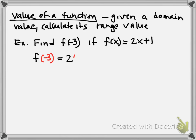So basically, what they want you to do is instead of writing x, every place you see x, you're going to replace it with negative 3. We had x over here and x next to the 2. And then we just start solving. So what's 2 times negative 3? Negative 6. What's negative 6 plus 1? So our ultimate answer would be f at negative 3 equals negative 5.